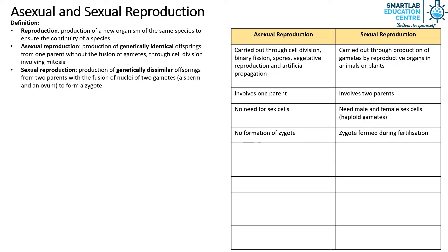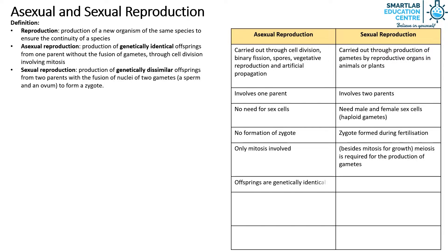In asexual reproduction, only mitosis is involved. But in sexual reproduction, besides mitosis for growth, meiosis is required for the production of gametes. The offsprings are genetically identical in asexual reproduction, but the offsprings are genetically dissimilar in sexual reproduction.